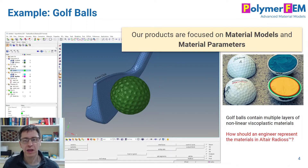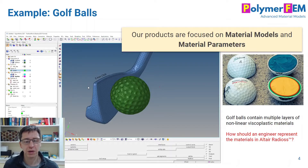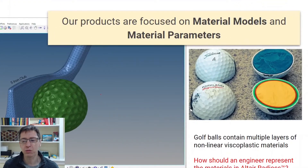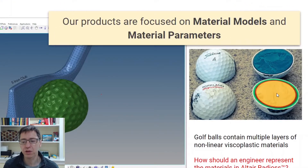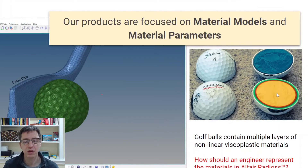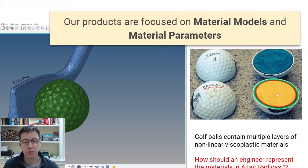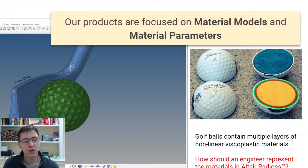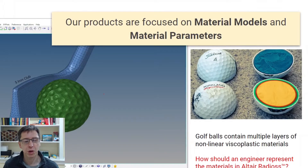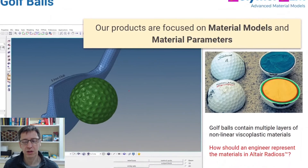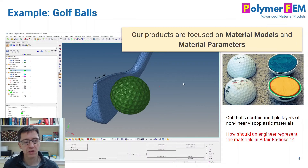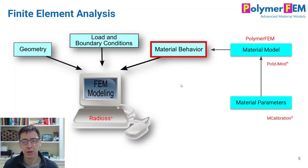Our products are focused on the materials and the material parameters. To make this a little more visual, I'm going to talk about a golf ball. A golf ball is a surprisingly complicated structure. It has multiple layers, typically with different materials and different properties. If you're an engineer working on designing a golf ball, you need to think carefully about what the properties are of these materials — and that's really what I want to show here.